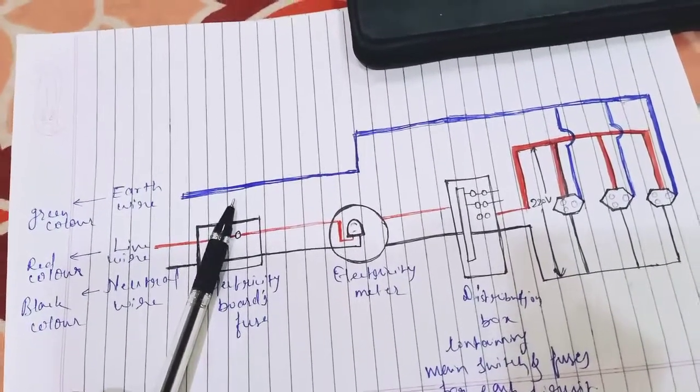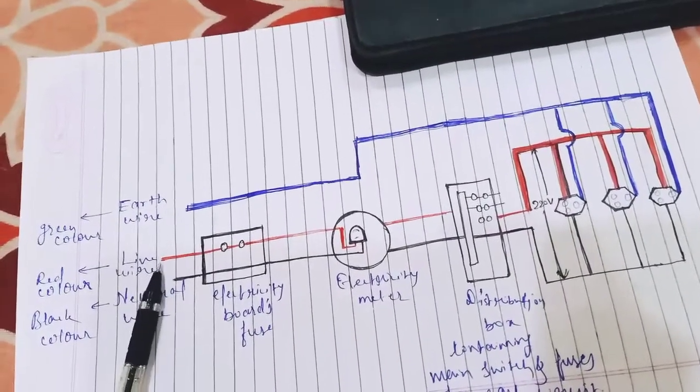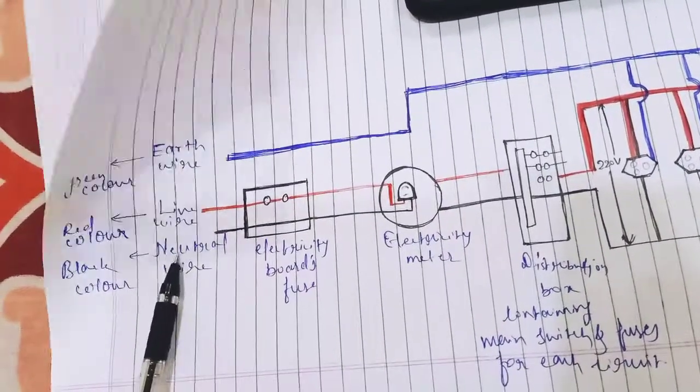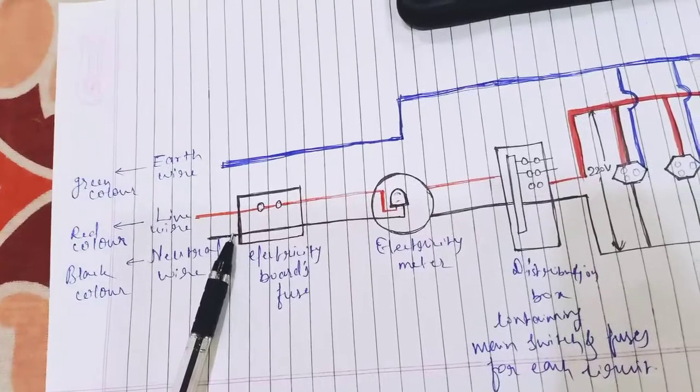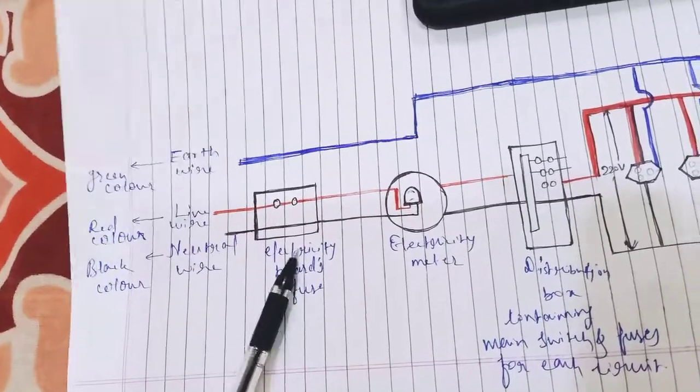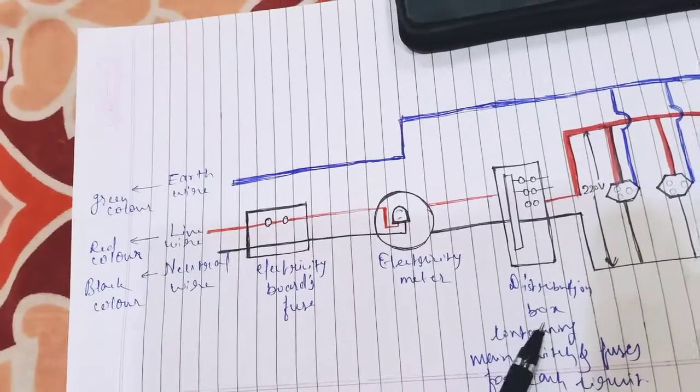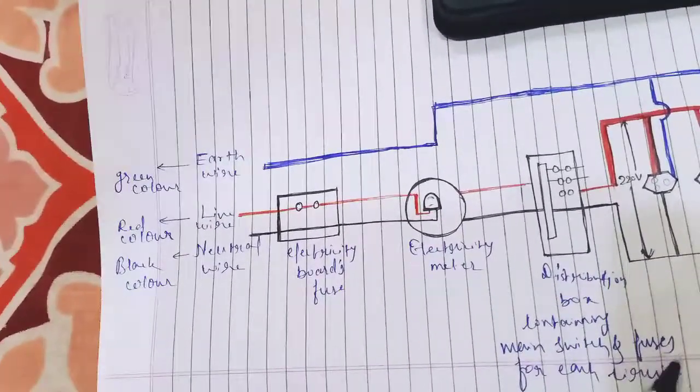The live wire is insulated by red color and neutral wire is in black color. This is the electricity board's fuse, and this is the electricity meter, and this is the distribution box containing main switch and fuses for each circuit.